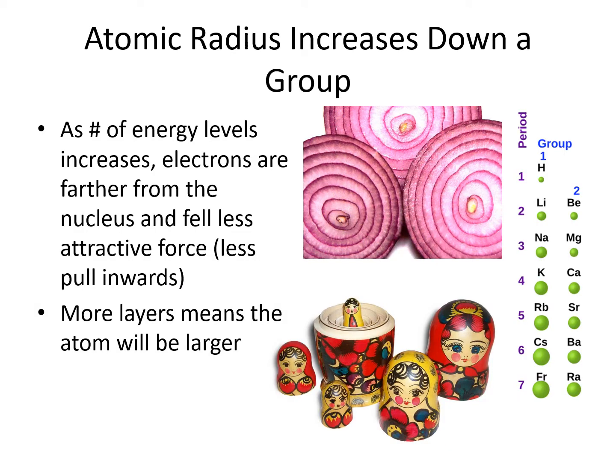As you go down a column, atomic radius increases. This is because each row has one more energy level, like layers of an onion or Russian stacking dolls. Having more layers means it is going to be bigger. Additionally, the electrons on the outside are shielded more and they are farther from the nucleus, so they feel less of an inward tug by the protons on the inside.